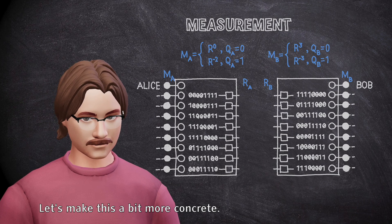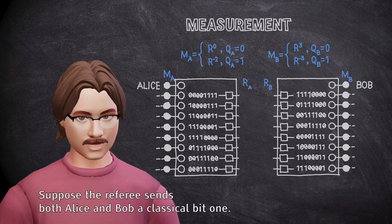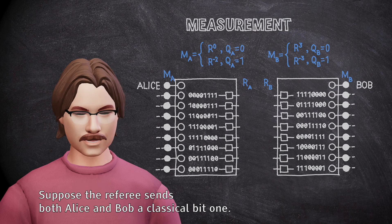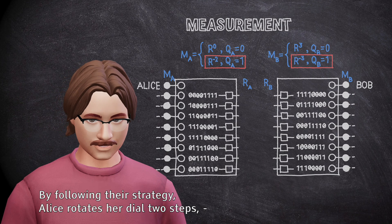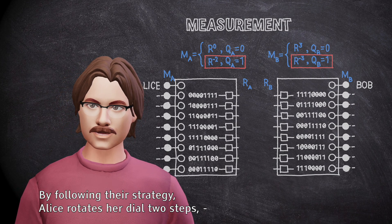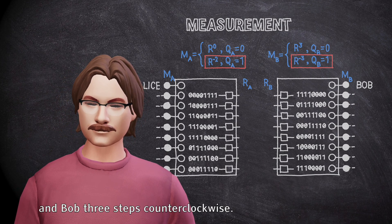Let's make this a bit more concrete. Suppose the referee sends both Alice and Bob a classical bit one. By following their strategy, Alice rotates her dial two steps, and Bob three steps counterclockwise.